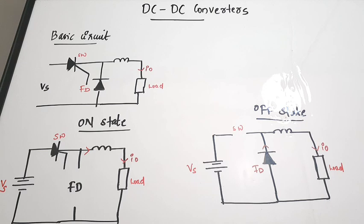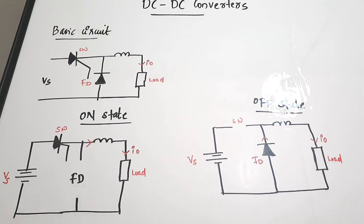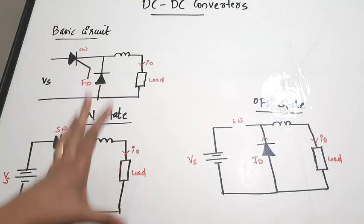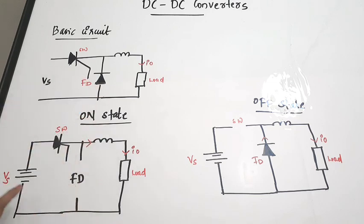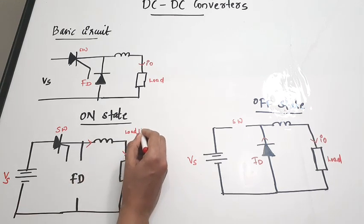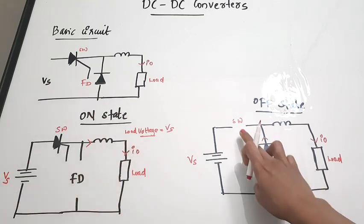Let's see how the on-state and off-state work. During the on state the switch is in the on condition, and the full source voltage Vs appears across the load. We are not considering any amplification of voltage here — whatever the Vs value is, you get it across the load. So during the on condition, load voltage equals Vs.